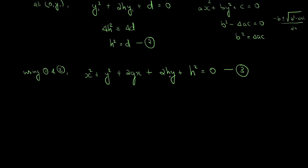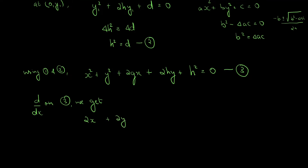This equation has two arbitrary constants, g and h. We need to eliminate those arbitrary constants using differentiation, so the required differential equation will be of second order. Differentiating equation 3 with respect to x gives: 2x + 2y·y′ + 2g + 2h·y′ = 0.